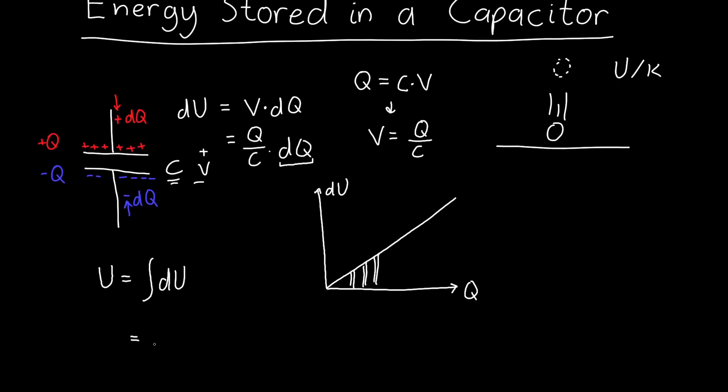And so we have an expression for DU in terms of Q, C, and DQ. It's just equal to Q over C times DQ. Now C is a constant, it's the capacitance of the capacitor. In this case, I've shown it as a parallel plate capacitor, but it could be a spherical capacitor, it could be a cylindrical capacitor, it could be anything that we want.